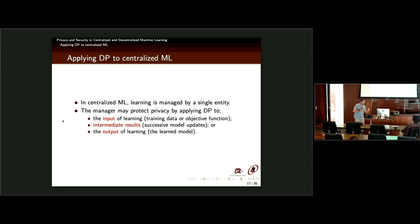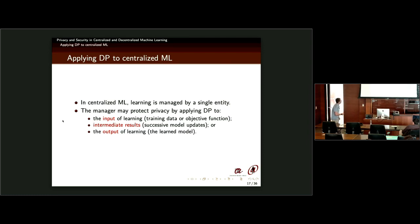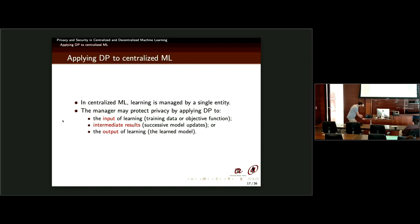With all those countermeasures, differential privacy can be applied to centralized machine learning in three different stages. First, at the input of learning — protect the training data by differential privacy before using them for training. Second, protect intermediate results by adding noise to the updates, as discussed. Third, protect the learning model after training — add noise to the model before releasing it. So there are three stages: input, intermediate results, and output.